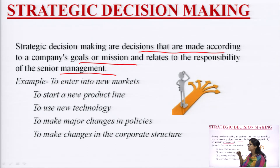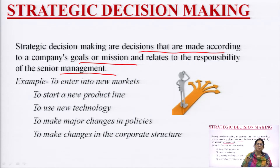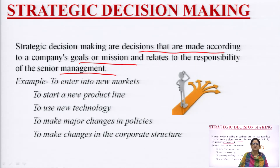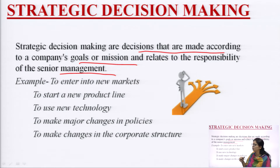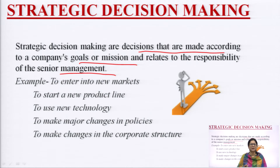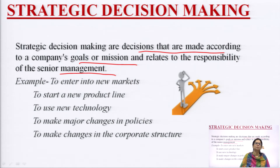An example of strategic decision making is entering a new market. Suppose you are currently in a business of textiles or FMCG products and you want to move into another kind of market — the hotel industry, shipping, or any other area of diversification or expansion. Or suppose you are currently dealing in products for youngsters and now you want to deal in products for adults or teenagers — your target market becomes different. So entering a new market requires strategic decision making.